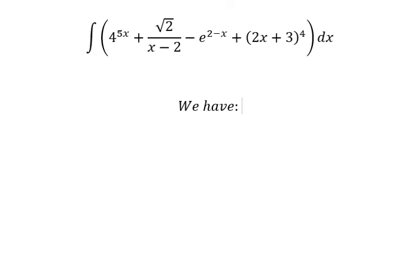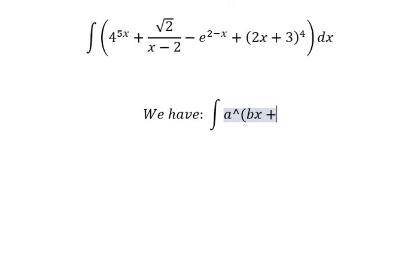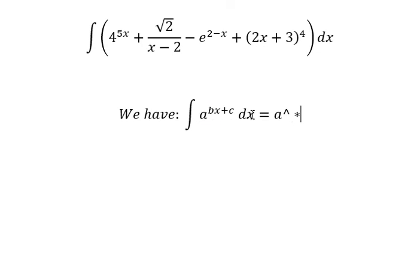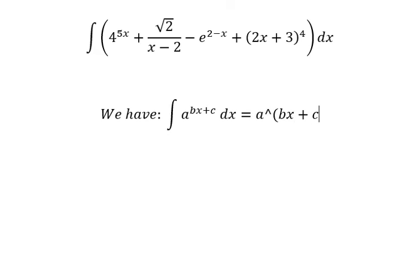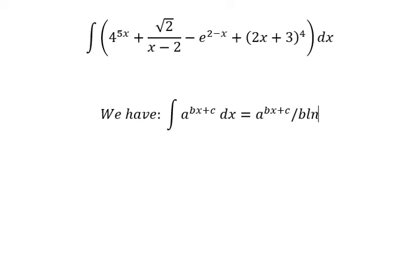The first formula: the integration of a to the power of (bs + c) equals a to the power of (bs + c) over b times ln(a), plus the constant C.